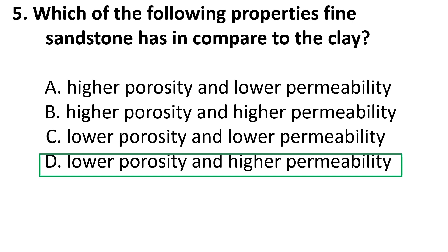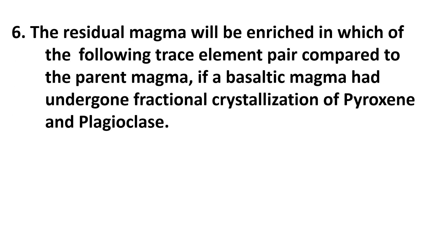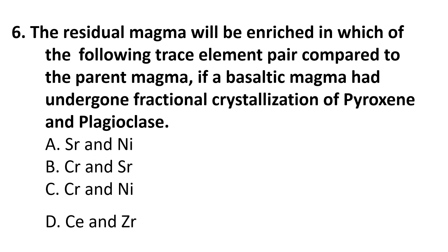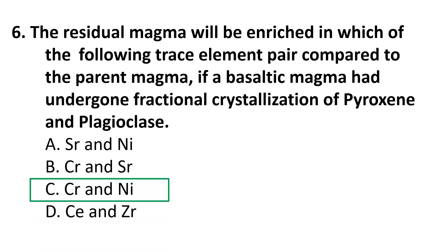Sixth question: The residual magma will be enriched in which trace element pair compared to the parent magma, if it is a basaltic magma that has undergone fractional crystallization of pyroxene and plagioclase? Choices are: A) Strontium and nickel, B) Chromium and strontium, C) Chromium and nickel, D) Cerium and zirconium. The correct answer is D, cerium and zirconium.